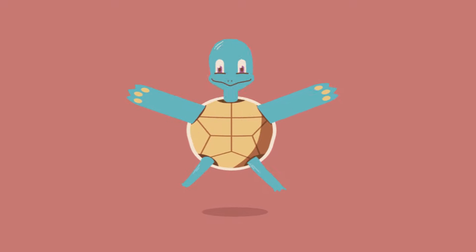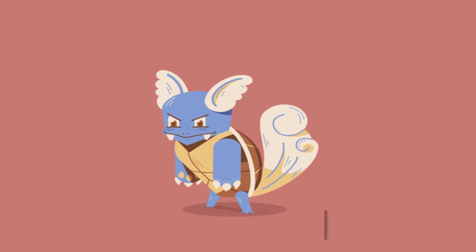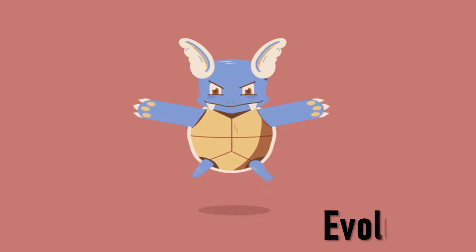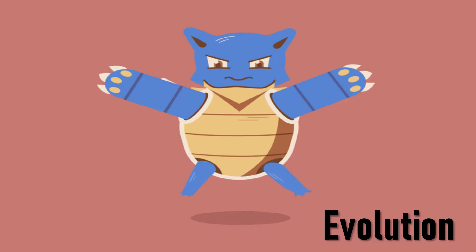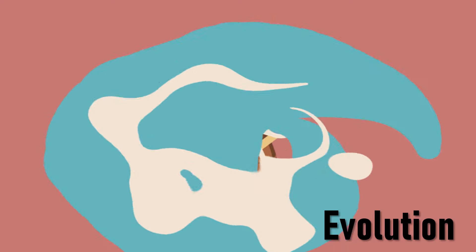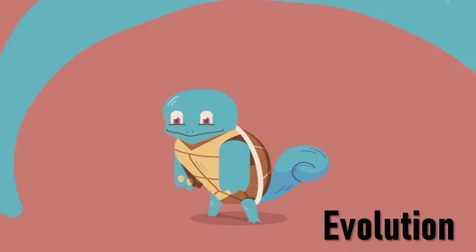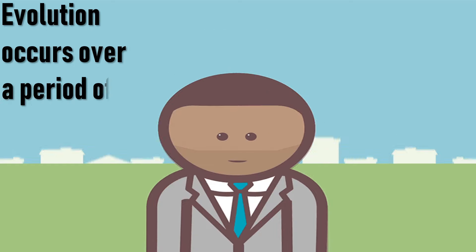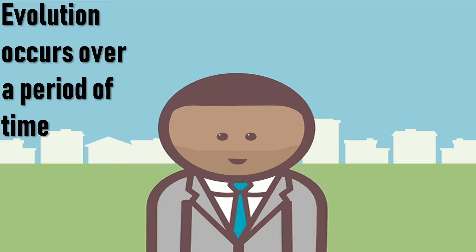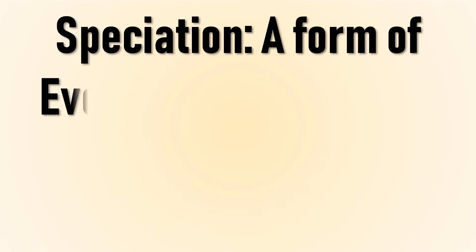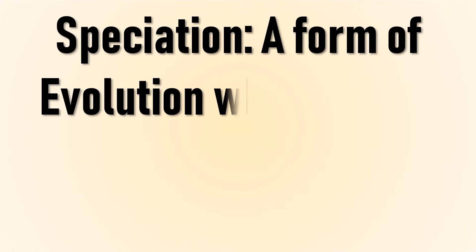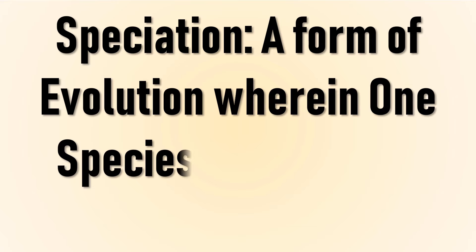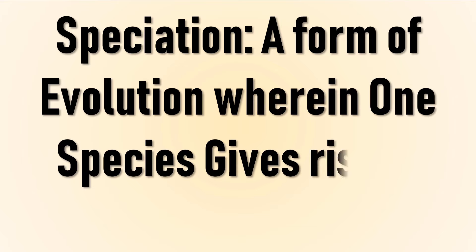From childhood we know that one form of species can give rise to another form of species — this is evolution. However, in real life evolution is not instant; it occurs over a period of time. Speciation is a form of evolution wherein one species gives rise to another species.